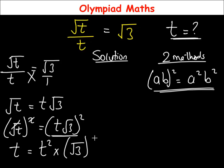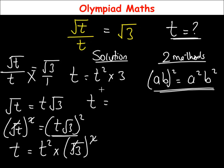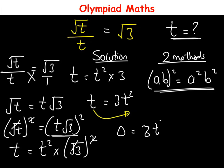So (√3)² gives us 3, meaning t equals t² times 3, which is 3t². We can then move t to the other side of the equation; moving +t across the equality sign changes it to minus t, giving 0 equals 3t² minus t.